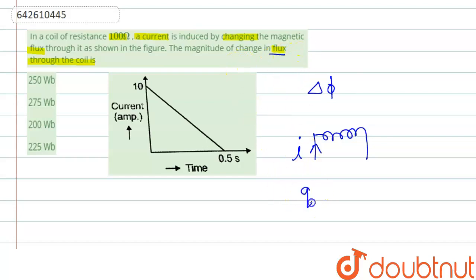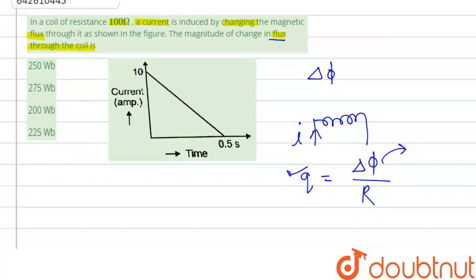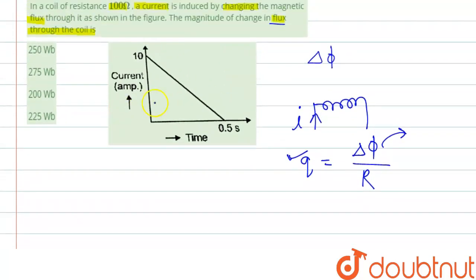It is related to the charge, and it is the change in flux divided by the resistance of this coil. So to calculate the change in flux, we have to calculate the total charge. Because R is given, if we calculate q, we can calculate the change in flux.